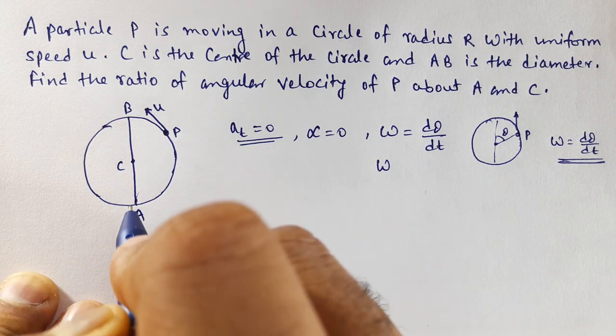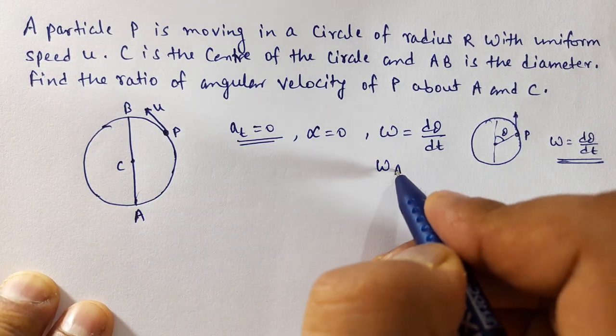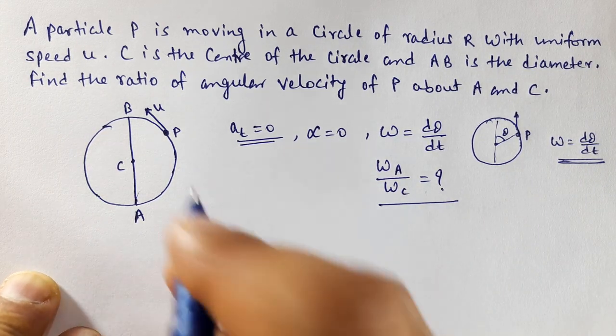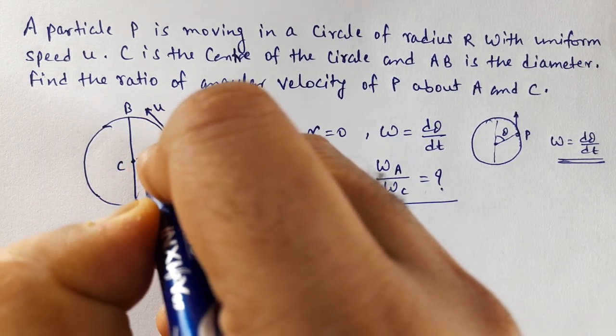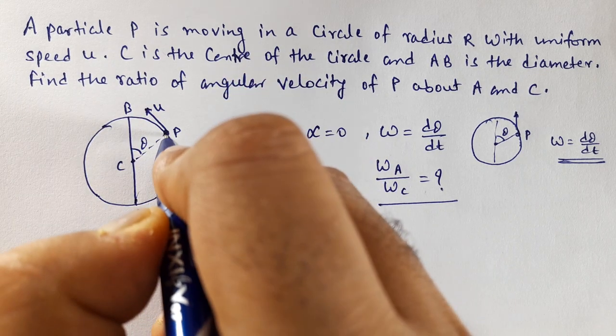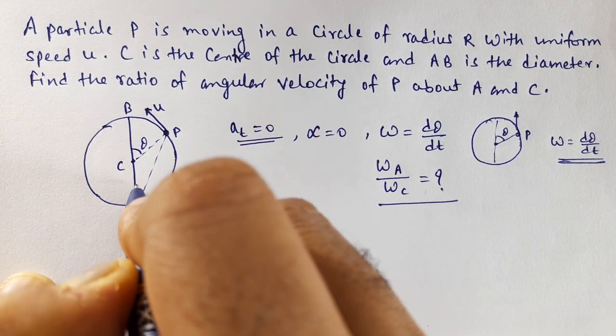This particle P is in circular motion about A and C. So we need to find ωA by ωC. First, let's draw a circle from C. Let this angle be θ. Then, for a circle from A, let this angle be α.